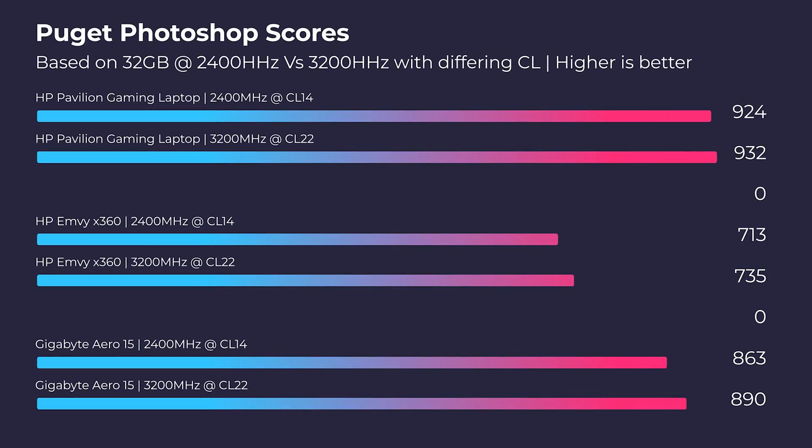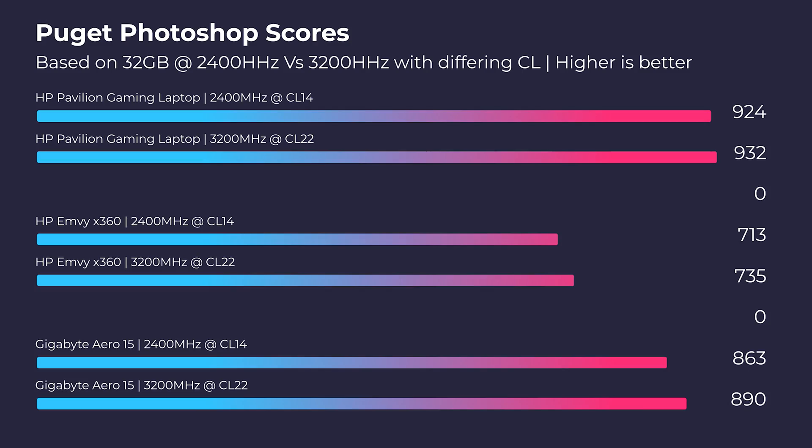Moving forward to speed — how big of a difference does speed make for these tests? Both configurations used two 16 gig sticks of RAM equaling 32, comparing 2400 megahertz versus 3200 megahertz. You can see there's a slight difference in performance. Keep in mind that latency differs between the two — CL14 is a lower latency. Latency is basically the timing for how long it takes your RAM to respond and initiate a command. So upgrading from 2400 megahertz at CL14 to 3200 megahertz would yield more performance from that RAM configuration.